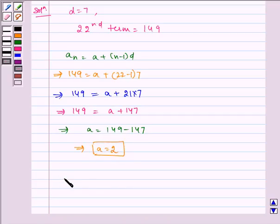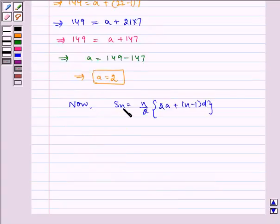Now we know that S_n equals (n/2) multiplied by [2a plus (n minus 1)d]. Now S_n, that is S_22, is what we have to find out.